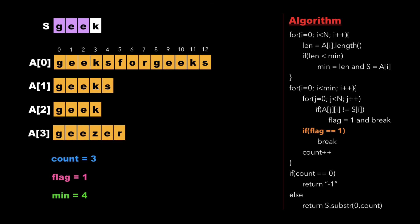We check whether the value of flag is one, which it is, so we break out of the outer for loop as well. We then check whether count is zero, which is false. So we go to the else part and return the substring of s from zero up to count number of elements. Therefore we return 'gee' as the longest common prefix.